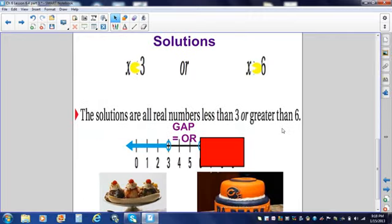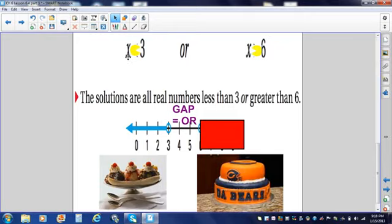So how will we graph it? Well, let's graph x is less than 3. This will be an open circle. There's my open circle. And the graph goes to the left. 2, 1, 0 are all less than 3.